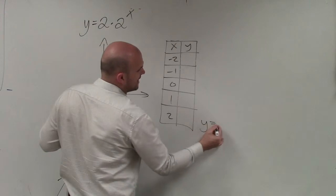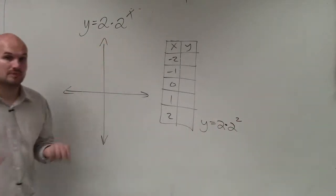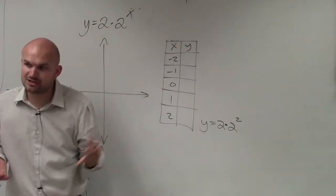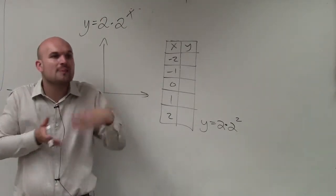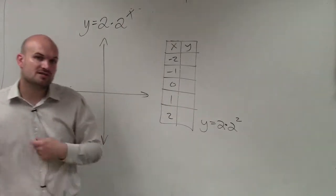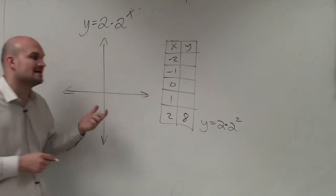So let's do, I say y equals 2 times 2 to the second power, right? You just plug 2 in for x. So make sure, guys, following the order of operations, we raise to the power first, then we multiply. So 2 squared is 4, 4 times 2 is 8. Right?